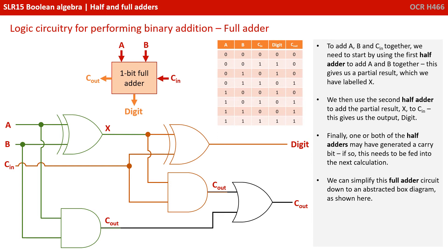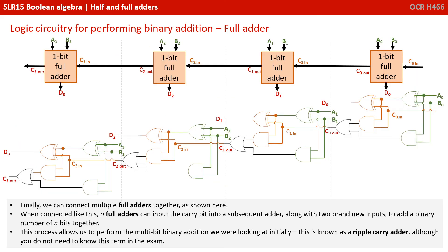We can simplify this full adder circuit down to an abstracted box diagram as shown here, with our inputs in red and our outputs in orange. We can then connect multiple full adders together. When connected like this, N full adders can input the carry bit into a subsequent adder, along with two brand new inputs, to add a binary number of N bits together. This process allows us to perform the multi-bit binary addition we were looking at initially, and this is known as a ripple carry adder, though you don't need to know that term for the exam.